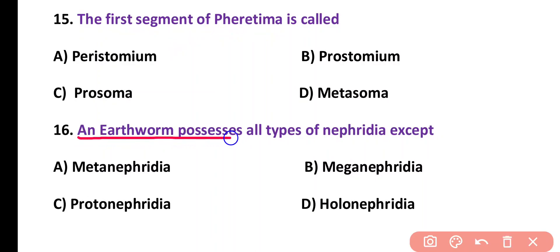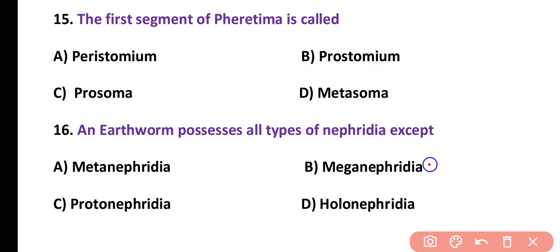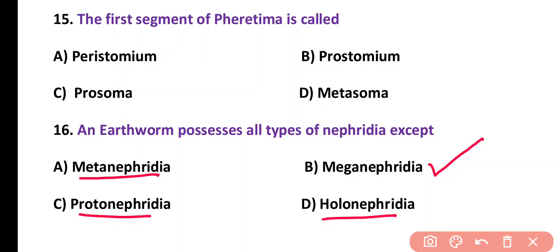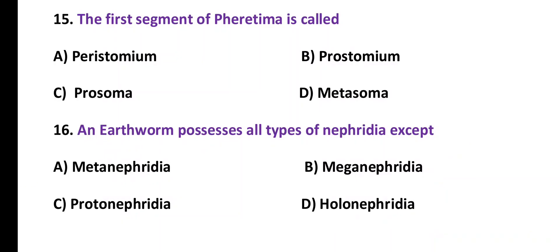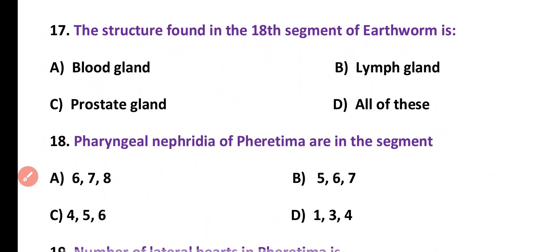Question number 16. An earthworm possesses all types of nephridia except: metanephridia, meganephridia, protonephridia, or holonephridia. Correct answer is option B. Metanephridia, protonephridia, and holonephridia are present in earthworm but meganephridia is not present.